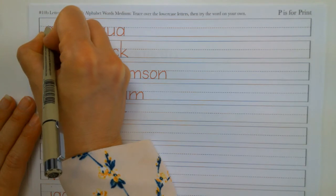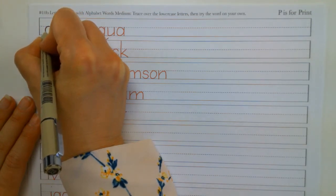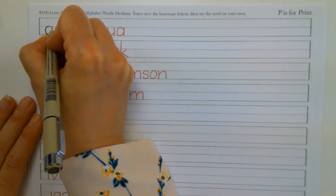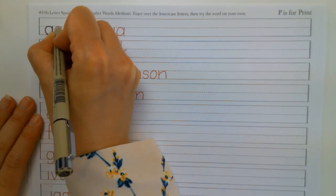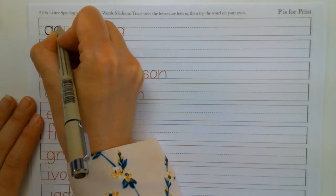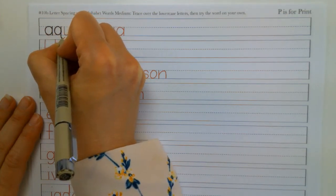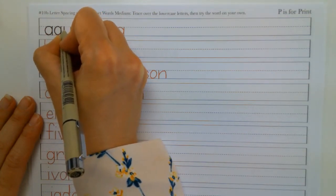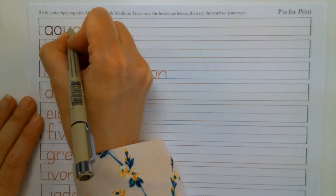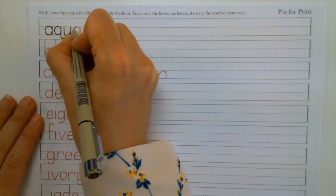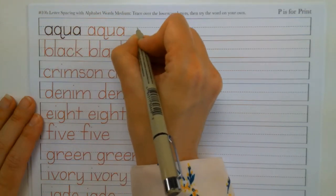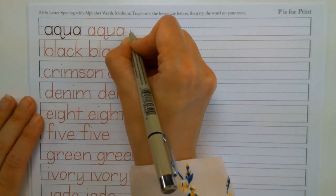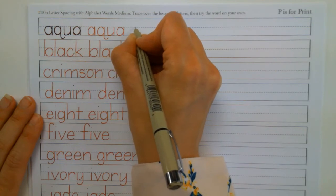So same thing, you're going to trace over my letters, and you're seeing the space in between getting used to that. Aqua. Okay, and then you're going to do that twice, and then try it on your own. So leave about a letter space, and then try it on your own.